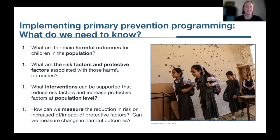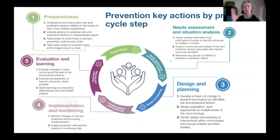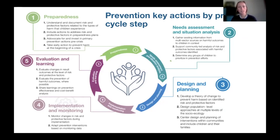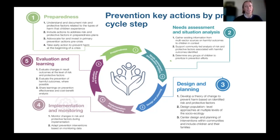Within the framework, there are two ways of operationalizing this. The first is by looking at key actions that we can take in each step of the program cycle — there are two to four key actions for each step. This diagram on the slide comes from the framework. Within the framework, there is further explanation on each of the key actions, links to resources to help you implement those actions, and some examples. This gives a really practical way that you can check, as you go through your planning, preparation, implementation and evaluation, whether you did all of the key steps needed for prevention programming.